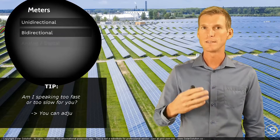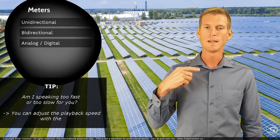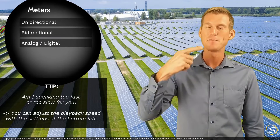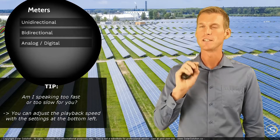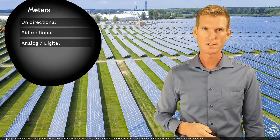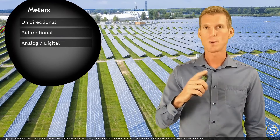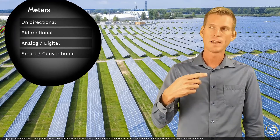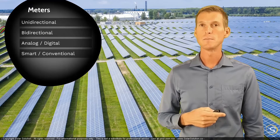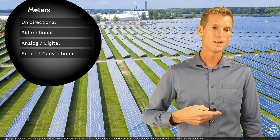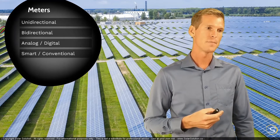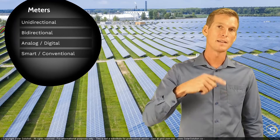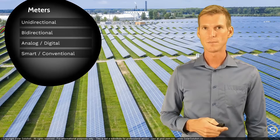There's also a difference between analog and digital meters — this is more about the display. Analog meters use dials that rotate or numbers that roll, while digital ones have LCD displays where you can read a lot of information. Then there's a difference between smart and conventional meters. Conventional meters can only measure, and somebody comes every now and then to check them. Smart meters can be monitored remotely, and sometimes they can also act — they can connect or disconnect you from the grid.